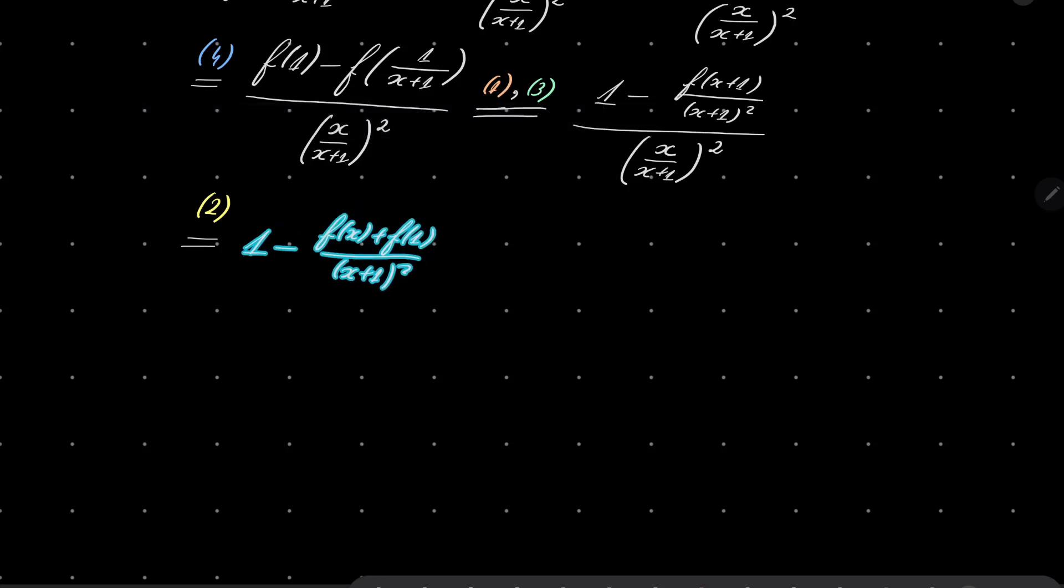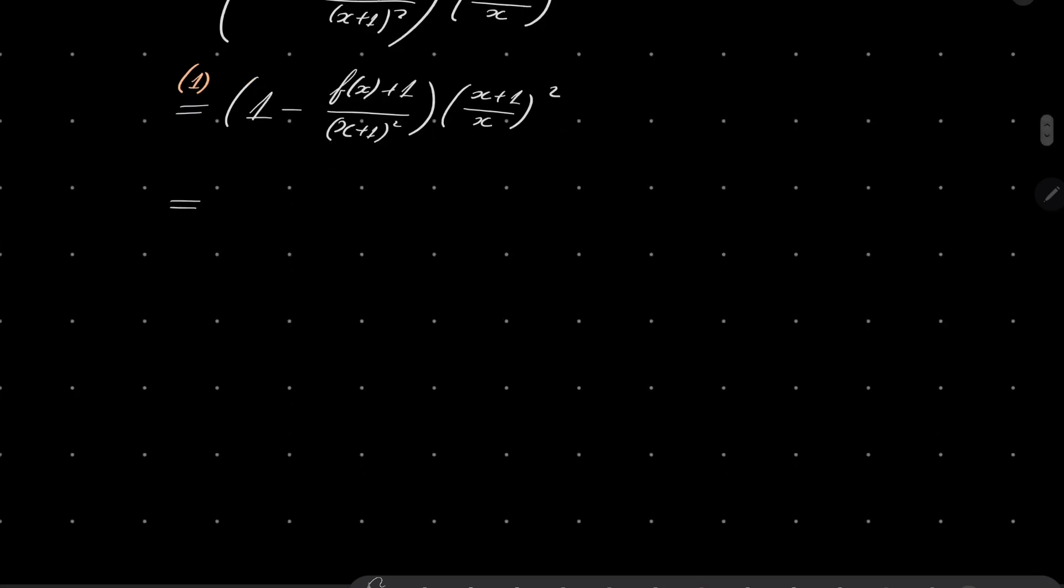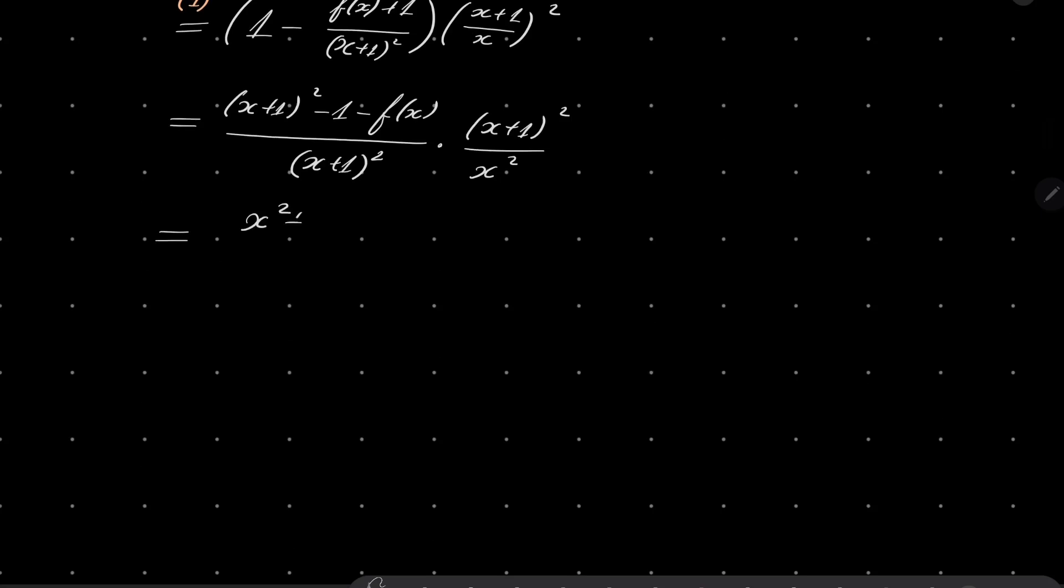Alright, now I will use condition 2 once again. f(x+1), it's f(x) + 1 over (x+1)². And maybe you know what, let's get rid of this fraction, because dividing by x over (x+1)² is the same as multiplying by the reciprocal. And now one last time, using the fact that f(1) is 1, so using condition number 1, we have the following: it's 1 - f(x) + 1, (x+1)² times (x+1)/x². And now we can make the common denominator, (x+1)² - (1 - f(x)) over (x+1)² times (x+1)²/x².